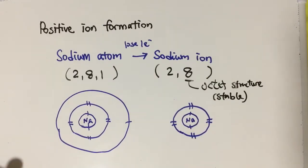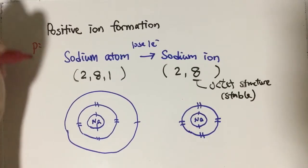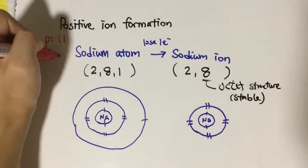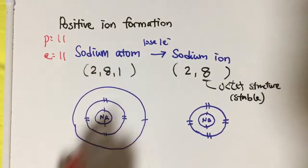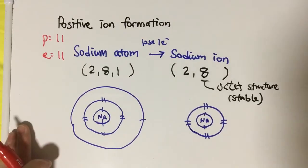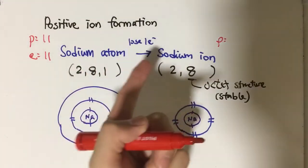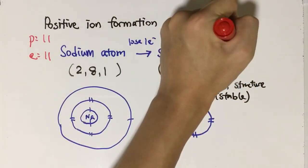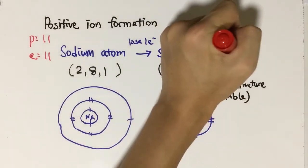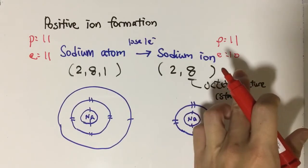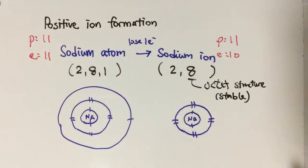Do you still remember the number of protons and electrons in sodium atom? The number of protons in sodium atom is 11, and the number of electrons is also 11 — that's why sodium atom is neutral. For sodium ion, the number of protons remains unchanged at 11 because sodium atom only loses one electron, not a proton. But the number of electrons becomes 10. Protons carry one positive charge, electrons carry one negative. More protons means more positive, so the charge will be 1 positive.